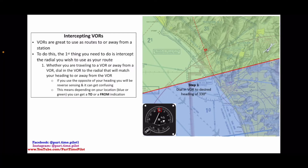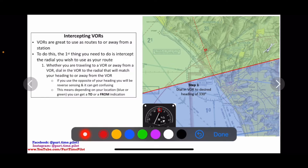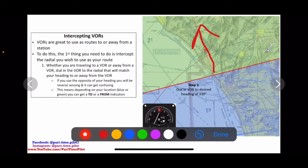Whether we're traveling to the VOR station or away from the VOR station, we want to dial in the VOR to a radial that will match our heading — whether we're heading to the VOR or away from the VOR. In this example, our desired heading is 330, so we want to dial in 330 as our heading. The reason is we want to travel in the same heading as what's entered in our VOR.